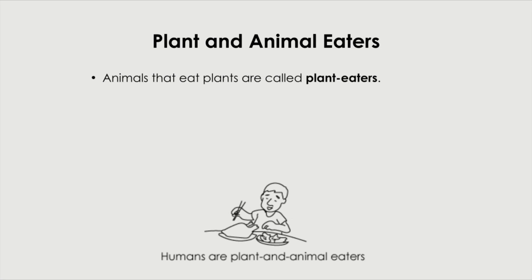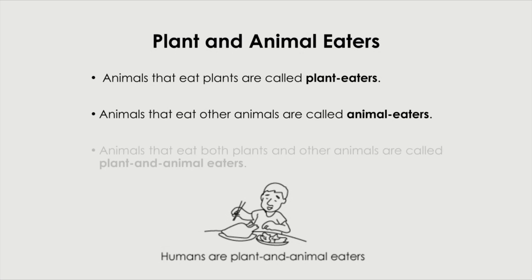With plant and animal eaters, animals that eat plants are called plant eaters. Animals that eat other animals are called animal eaters. And animals that eat both plants and other animals are called plant and animal eaters. Basically what they eat, you just add the eaters at the back. We humans are plant and animal eaters.